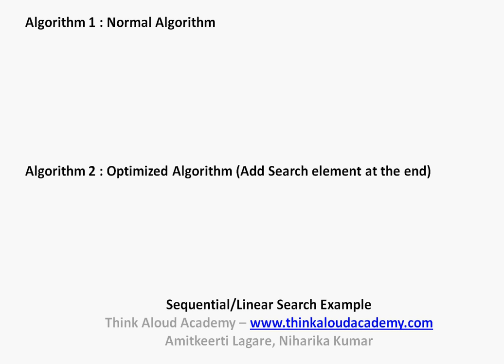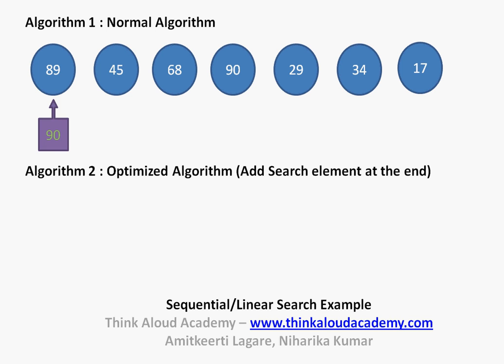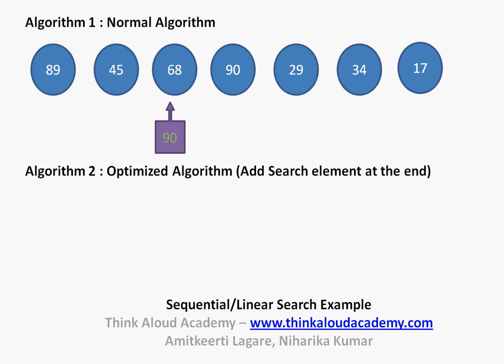Let's look at an example for Algorithm 1, the normal algorithm, and Algorithm 2, the optimized algorithm. In the normal algorithm, let's assume we have a list of numbers and we are trying to search for 90. The algorithm first compares 90 with the first element; if it doesn't match, it moves to the second, then the third, and so on until the element is found. Sequential search or linear search searches linearly through all the elements.